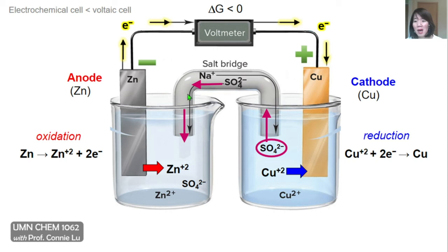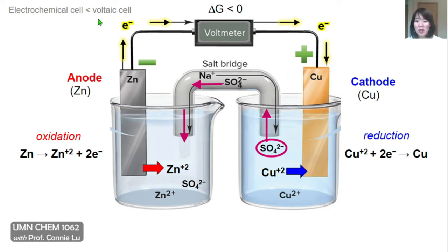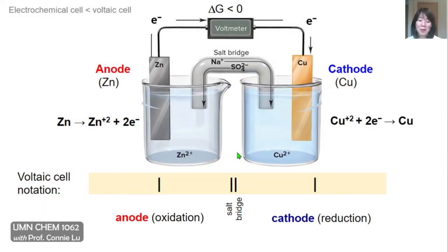This is where the salt bridge comes into play. The salt bridge maintains charge neutrality by moving the surplus of negative charge from the right half cell toward the left half cell, where the negative charges balance the formed zinc plus two ions. Sulfate ions can flow from right to left through the salt bridge. The salt bridge also has other ions present, such as a sodium salt, and the positive ions can move out of the salt bridge into the side that needs it. Electrons are moved from left to right through the wire, while negatively charged ions move from right to left through the salt bridge, creating a loop so that electron flow can continue.